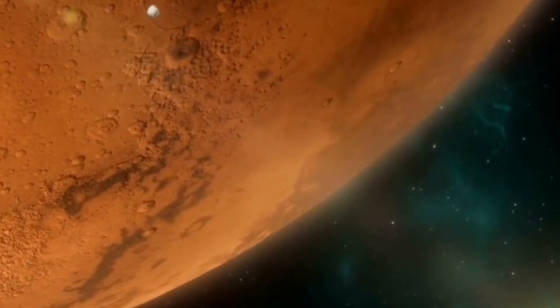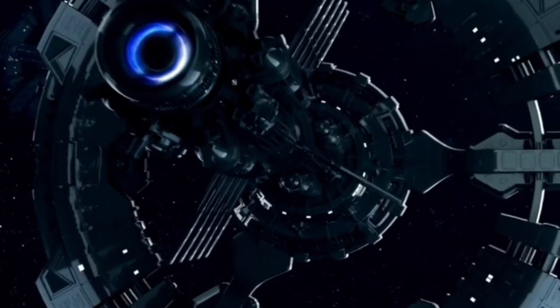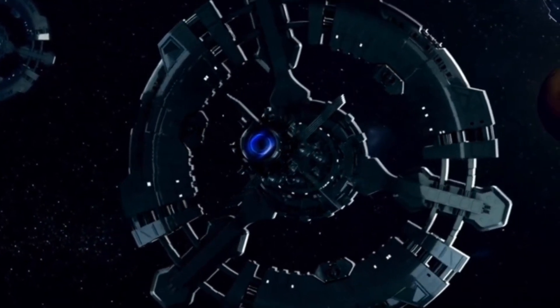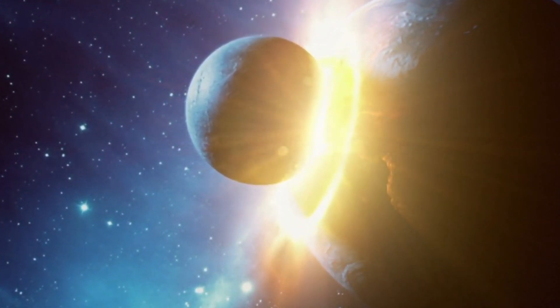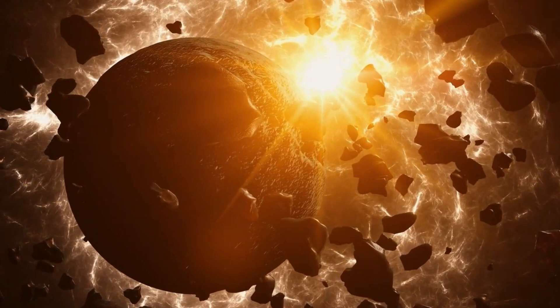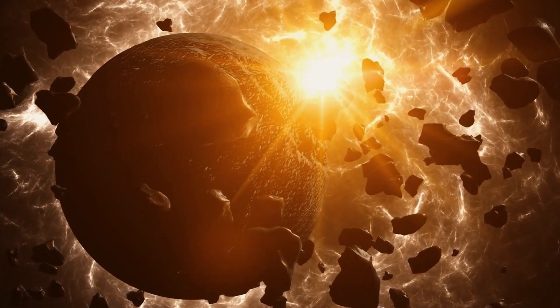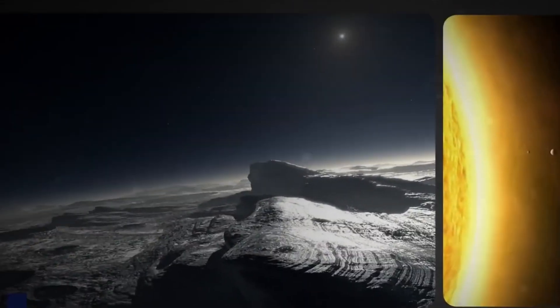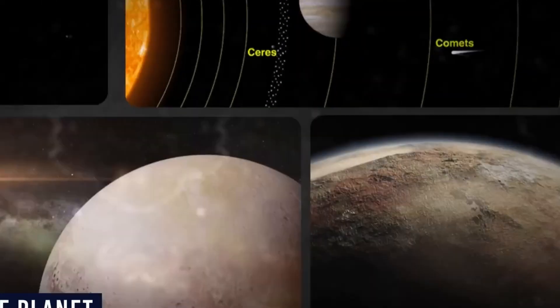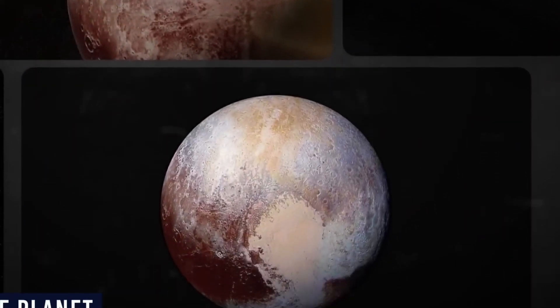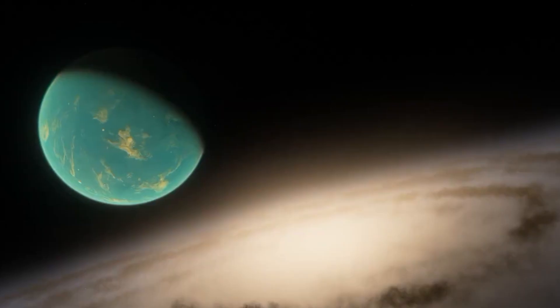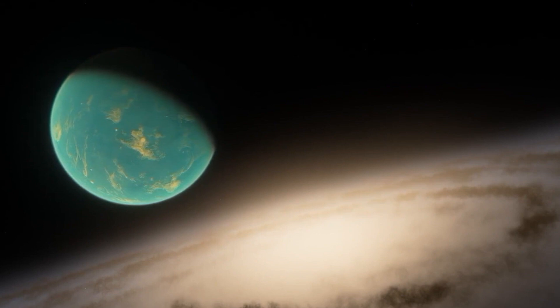Pluto's journey around the Sun is unlike any other planet in our solar system. It takes a staggering 248 years to complete a single orbit. Since its discovery in 1930, it hasn't even finished one full revolution. The intrigue doesn't stop there. Pluto's path is marked by its highly elliptical shape, deviating significantly from the near-circular orbits of the major planets. What makes Pluto's orbit even more peculiar is its inclination, angled at 17 degrees to the ecliptic plane.